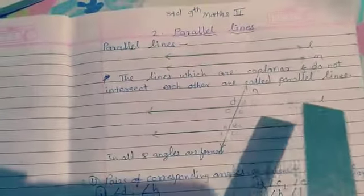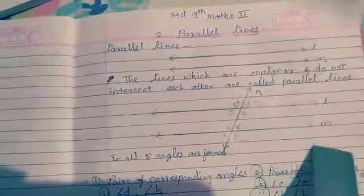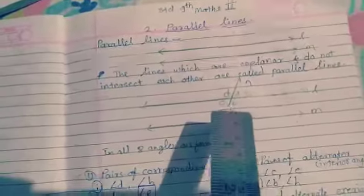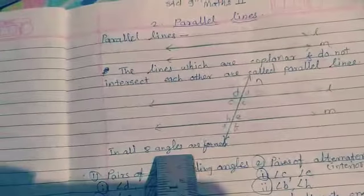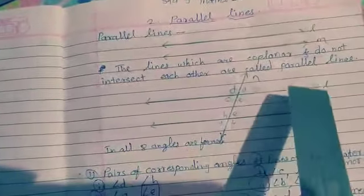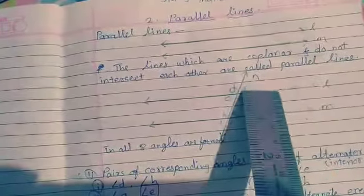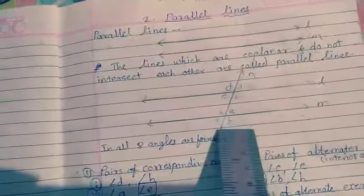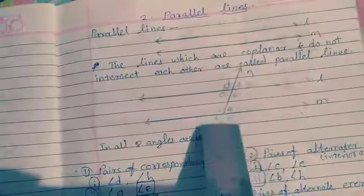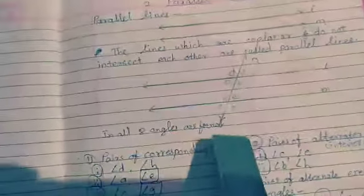Here, line L and M are two parallel lines and line N is their transversal. In all, eight angles are formed: A, B, C, D, E, F, G, H.